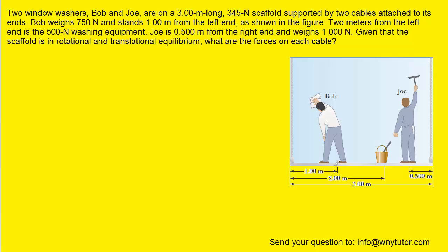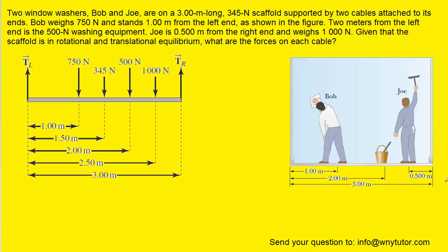We're going to draw a free body diagram of the platform that the window washers are standing on. We have the weight of Bob, 750 newtons, and then we have the weight of the platform itself, 345 newtons. Notice that the weight of the platform is acting at the geometric center of the platform, and that's why it's located 1.5 meters from the left end. We have the washing material weight of 500 newtons, and then the weight of Joe, 1000 newtons.